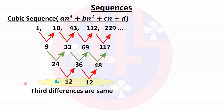Next we need to find the nth term. Using the standard format, we set up four equations: 6a = 12, 12a + 2b = 24, 7a + 3b + c = 9, and a + b + c + d = 1.